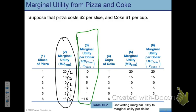We take the marginal utility number for pizza and divide it by the price of pizza to get the marginal utility per dollar. This column gives us the marginal utility per dollar on each unit of pizza. For example, when buying the fourth unit of pizza, the marginal utility per dollar is 6 divided by 2, which equals 3. This tells you that for each dollar of income you spend on that fourth pizza, you are converting that into 3 units of satisfaction.